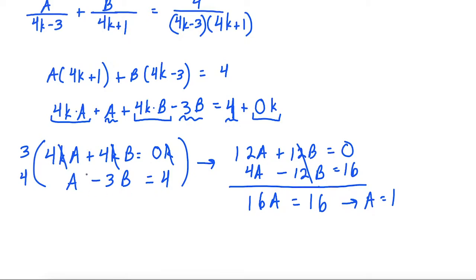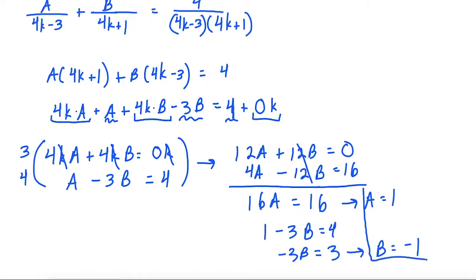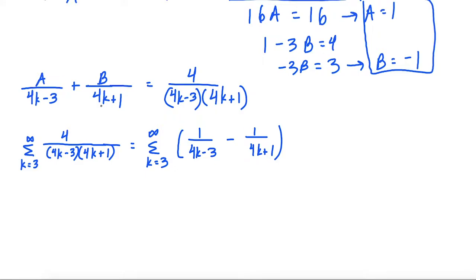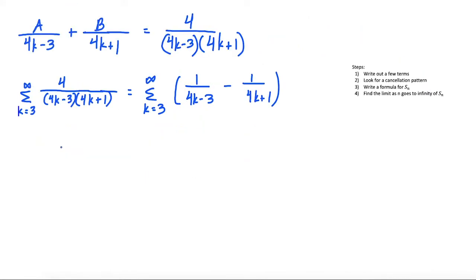We plug a equals 1 into the equation: 1 minus 3b equals 4. Subtracting 1 from both sides, we get negative 3b equals 3, which tells us b equals negative 1. With this information, we can now set up our fractions to evaluate the sum. Since a equals 1 and b equals negative 1, we rewrite the summation from k equals 3 to infinity as 1 over (4k minus 3) minus 1 over (4k plus 1).